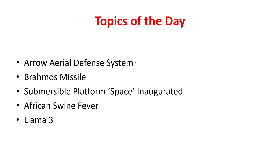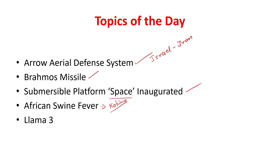Let us see the important topics of the day. First is the Aero aerial missile defense system, very important from the point of view of the Israel-Iran conflict. Then BrahMos missiles which India will be exporting soon to Philippines, the space platform of the Indian Navy that has been inaugurated, African Swine Flu noticed in Kohima, and LLaMA 3, an AI platform of Meta, the parent company of Facebook and WhatsApp.